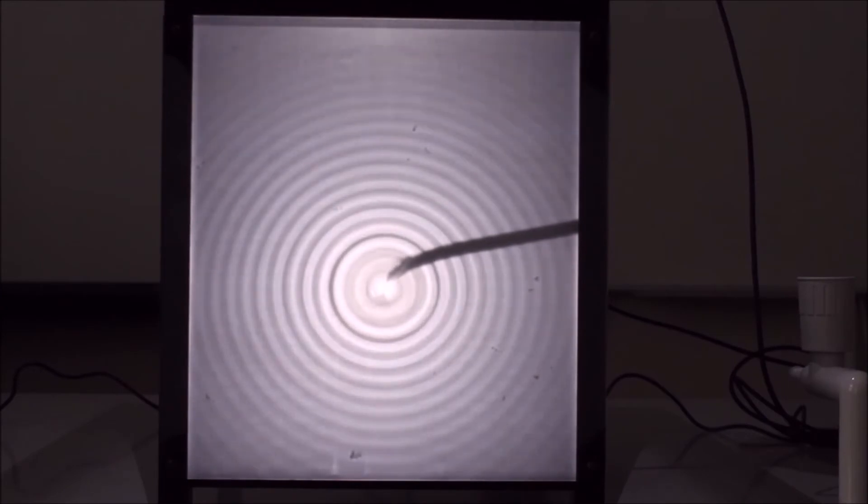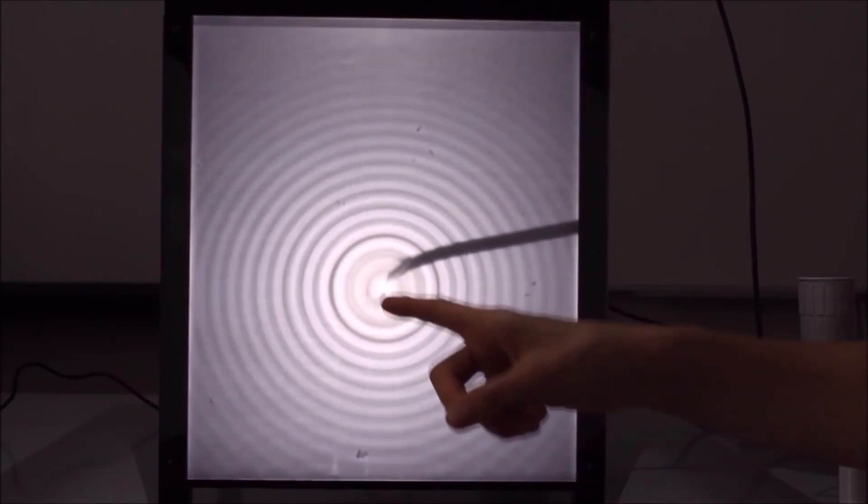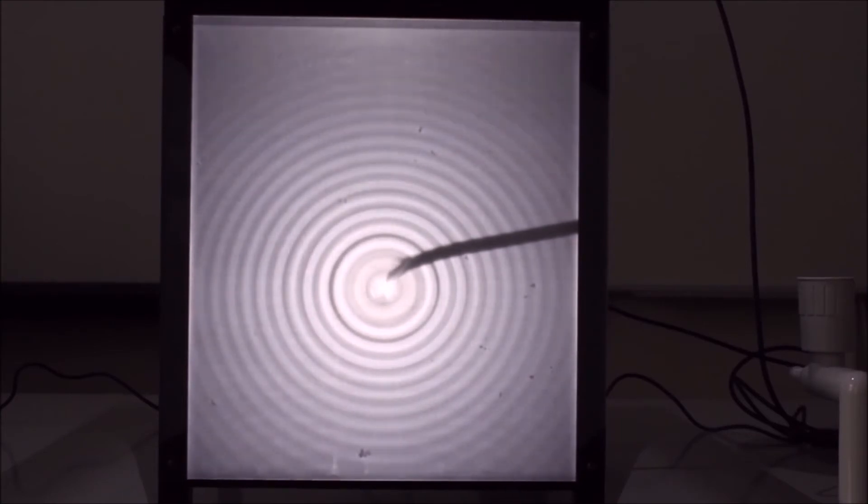És nincs más tennedő, hogy bekapcsoljuk magát a rezgéskeltőt, illetve a stroboszkópot. Rögzítettem a rezgéskeltő csúcsot, bekapcsoltam a stroboszkópot és a rezgéskeltőt. Nagyon szépen kirajzolódtak a víz felszínén a koncentrikus körök, a felületi körhullámok.